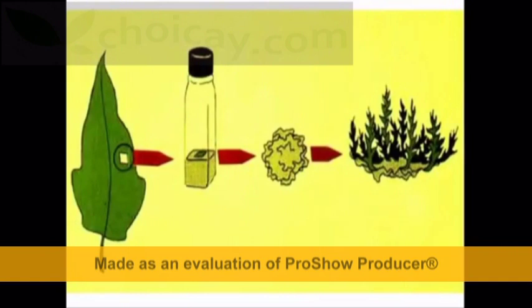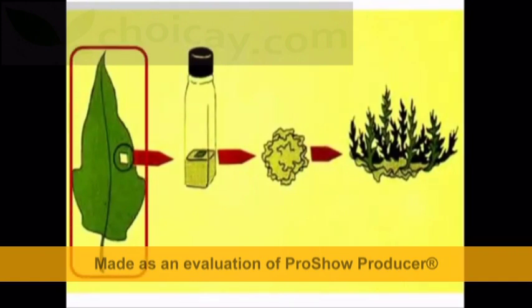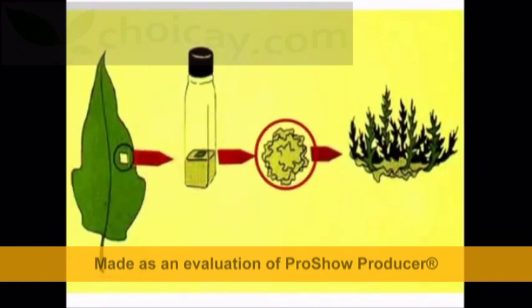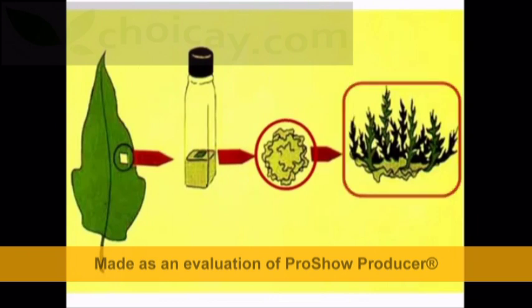This process involves differentiated cells to be de-differentiated into a callus, and re-differentiated back to an embryo that is capable of regenerating the whole plant.